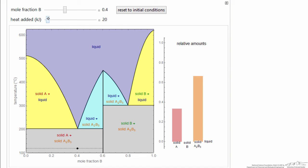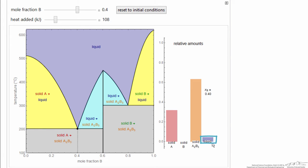As I add heat, of course the temperature increases until I get to this eutectic temperature of 200 degrees C. Notice I've added just enough heat that I've started to form some liquid on the right.